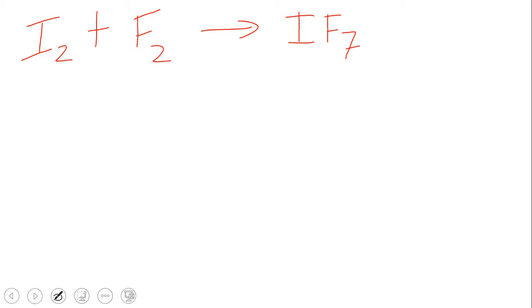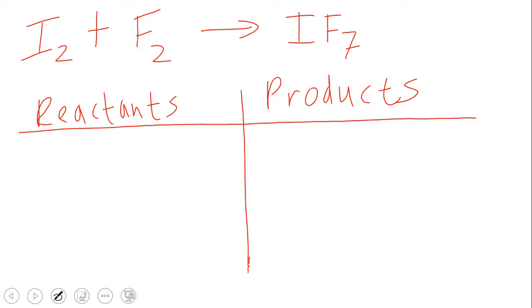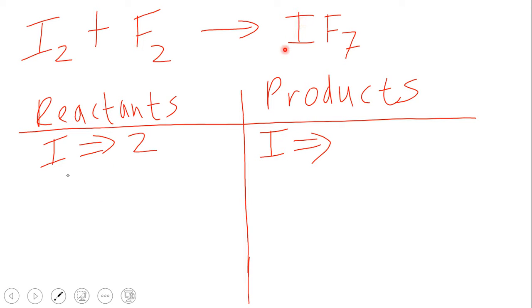This is a chemical equation, and the first thing we need to figure out is: is the chemical equation balanced? So we have the reactants on one side and the products on the other side. For I on the reactant side, we only have two. And for I on the product side, we have simply one, because there's no coefficient and no subscript — so that just stands for one.